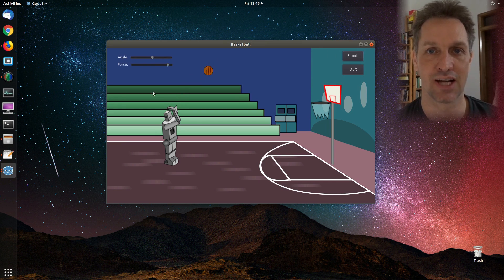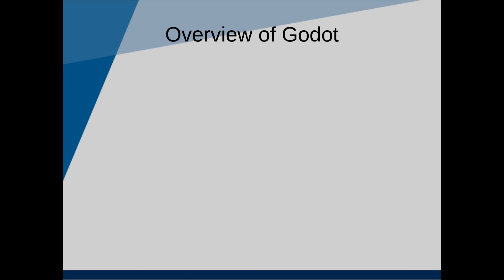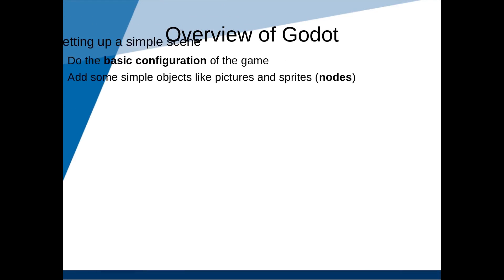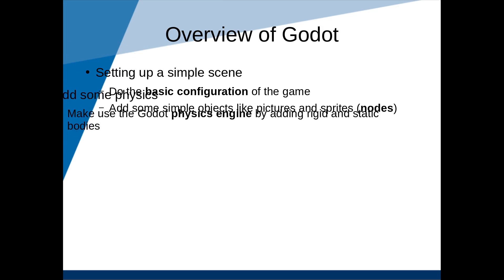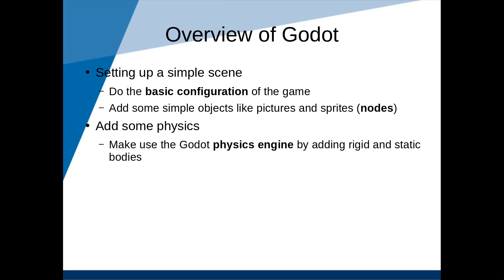We will be following step-by-step instructions to create this game. We will start off by learning about using the 2D editor to set up a simple 2D scene with simple nodes. Next, we will learn to add some simple physics to the game using rigid bodies and collision shapes.